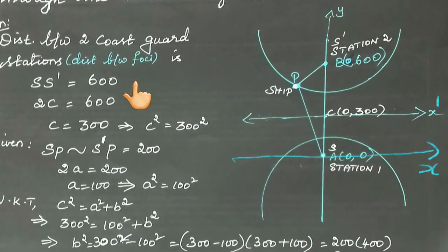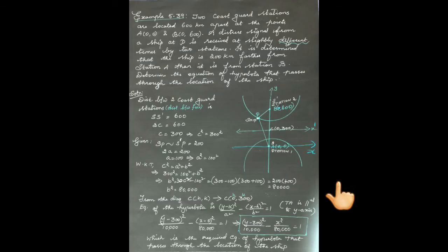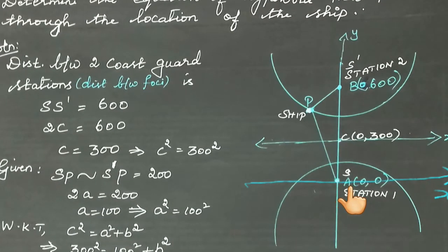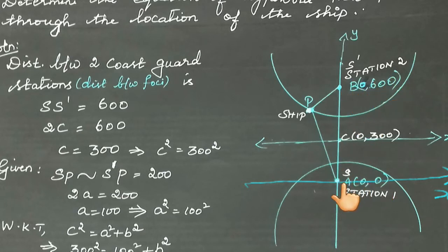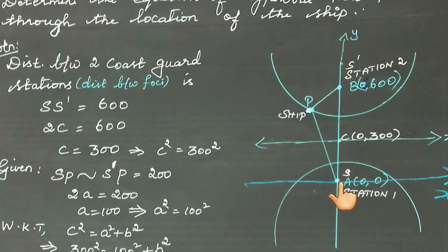Draw the x-axis and y-axis on the coordinate system. Now plot the points (0,0) and (0,600). Point A(0,0) is at the origin, and point B(0,600) lies on the y-axis. So both foci lie on the y-axis, meaning the transverse axis is along the y-axis.